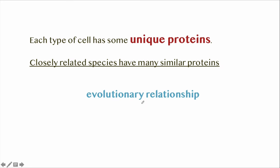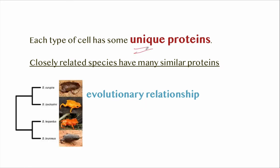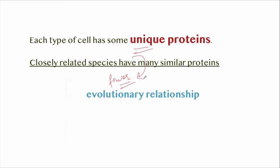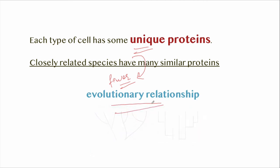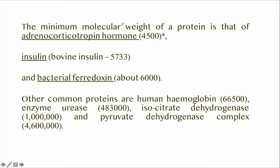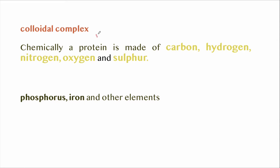A bacterial cell has 1,000 to 2,000 types of proteins. Each type of cell has unique proteins, and closely related species have many similar proteins while unrelated species have fewer common proteins. By studying the proteins of various species, we can show evolutionary relationships. These are various examples of molecular weights of proteins — for example, insulin has a molecular weight of 5,733. As proteins are macromolecules, they are not freely soluble in water and they form a colloidal complex.